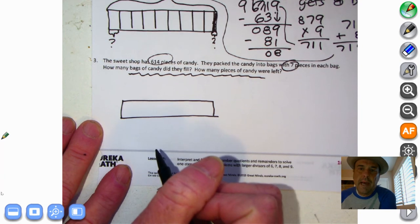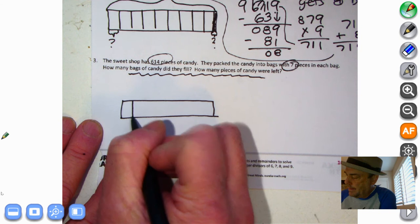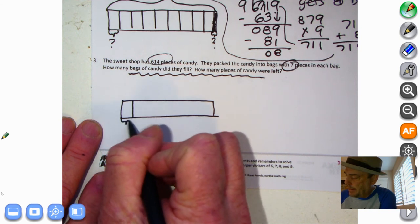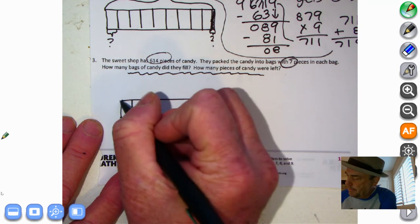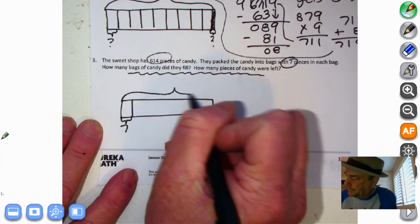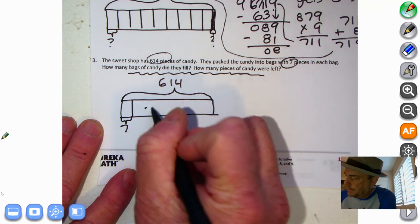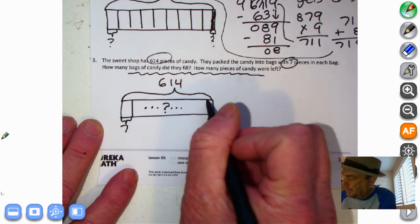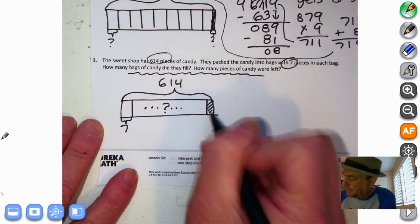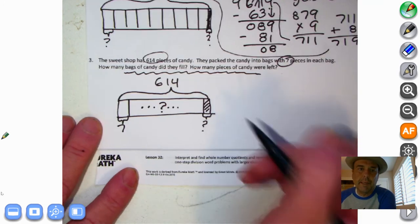Okay, they packed the candy into bags with seven pieces. So we know that each bag had seven pieces, right? We know that there were 614 pieces altogether. What we don't know is the number of bags. So we don't know the number of groups. Remember that lesson? And we do know there's a remainder, which we need to figure out. So let's set up our tape diagram like that.